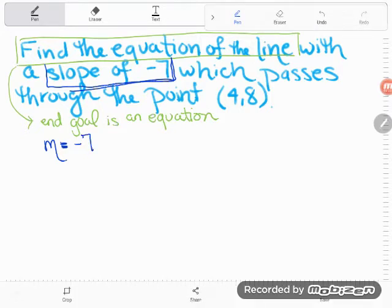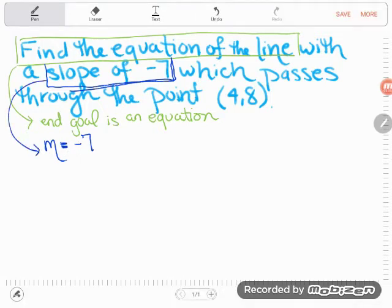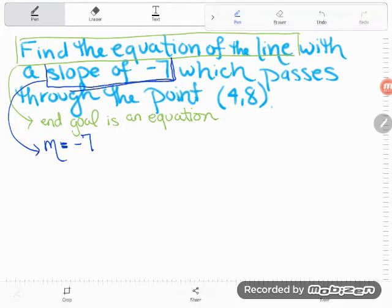So I'm just going to abbreviate that slope is negative 7 by saying M is negative 7. I'm not doing any math yet. I'm just writing out what I've been given. We've been given one other piece of information. We see that our line passes through the point (4,8).